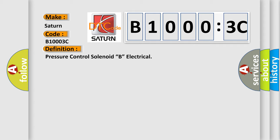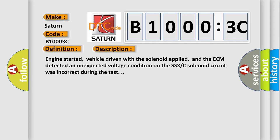And now this is a short description of this DTC code. Engine started, vehicle driven with the solenoid applied, and the ECM detected an unexpected voltage condition on the SS3C solenoid circuit was incorrect during the test.